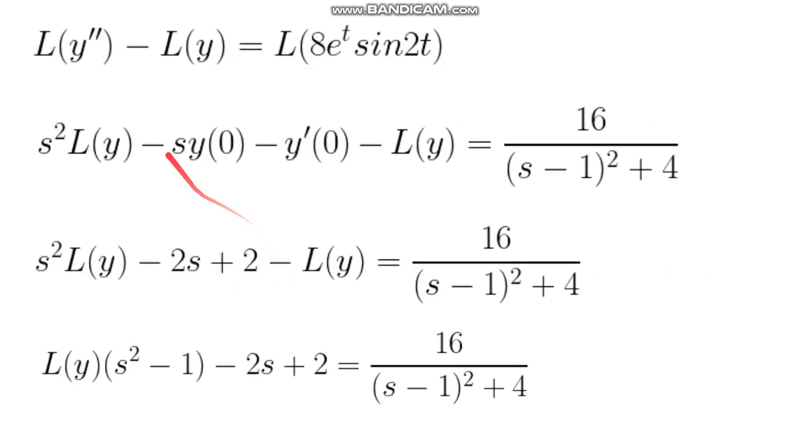So we start by taking the Laplace of everything, and this expands. What I did is I took out the 8 first because it's a constant. Your 2 would go over here, and here you would square it. 2 squared is 4, so that's where you would get the 4 from. 8 times 2 is 16.